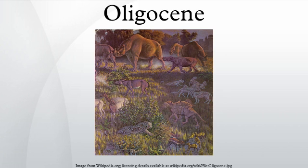The Oligocene is a geologic epoch of the Paleogene period and extends from about 33.9 million to 23 million years before the present. As with other older geologic periods, the rock beds that define the epoch are well identified, but the exact dates of the start and end of the epoch are slightly uncertain.